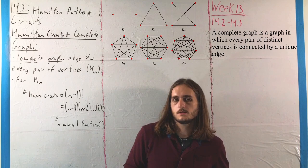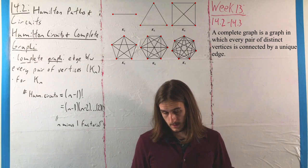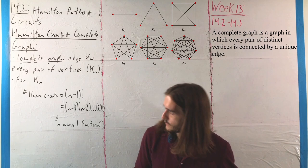With these complete graphs, the degree of every vertex is n minus one, because we have to cover every single possibility.